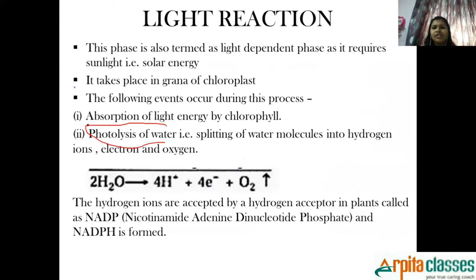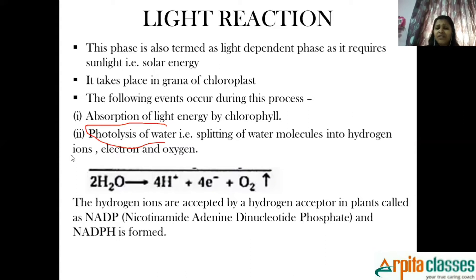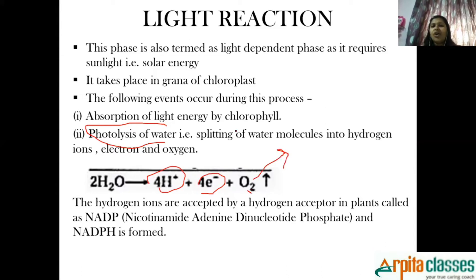What is photolysis of water? Photolysis of water means the water molecule is going to break down in the presence of sunlight. When water molecule breaks down in the presence of sunlight, we get hydrogen ions, we get electrons, and we get oxygen. This oxygen molecule is a waste product, so plants are going to release this oxygen molecule into the atmosphere.